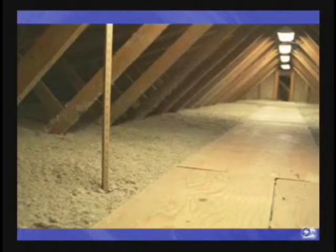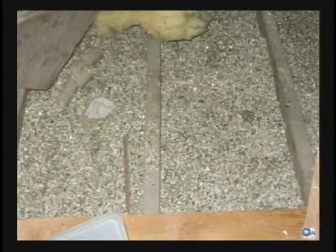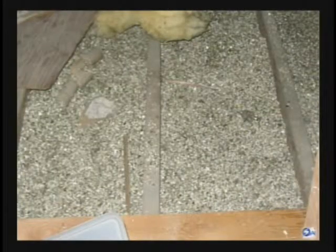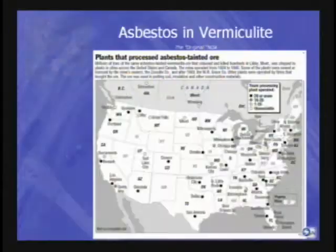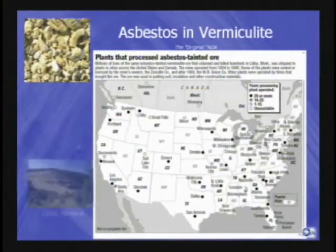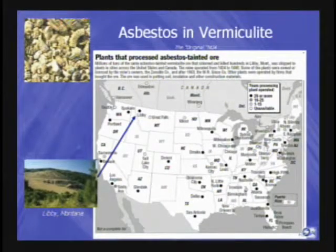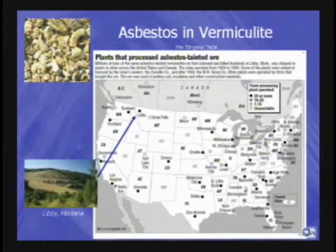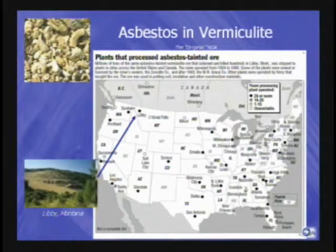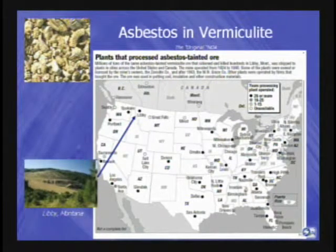However, insulation using vermiculite, particularly ore from Libby, Montana, may contain asbestos to this day. Vermiculite was mined in Montana between 1923 and 1990, and prior to its close, much of the world's supply of vermiculite came from Libby. Natural deposits of asbestos are commonly found in the same rocks that produce vermiculite.